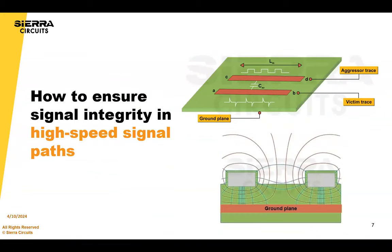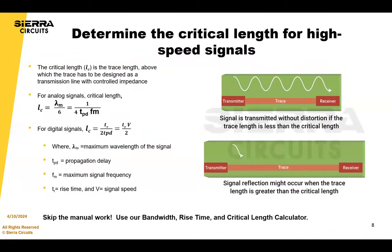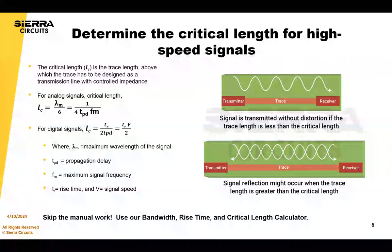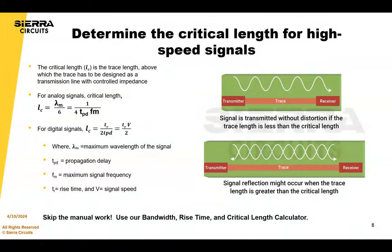How do you ensure signal integrity in a high-speed signal path? The first thing is to calculate your critical length — that's the trace length above which the trace has to be designed as a transmission line with controlled impedance. The signal is transmitted without distortion if the trace length is less than the critical length, and signal reflection might occur if the trace length exceeds it. That's why it's important to calculate.